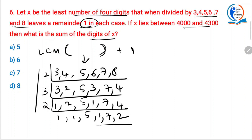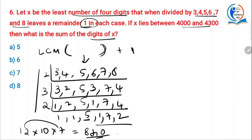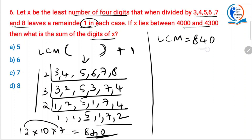The LCM of 3, 4, 5, 6, 7 and 8: working through — 2×3=6, 6×2=12, 12×5=60, 60×7=420, no — 12×7=84, 84×10=840. So 840 is the LCM. This plus 1 is 841, the least such number. But the number must lie between 4000 and 4300.